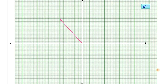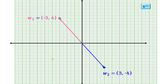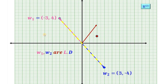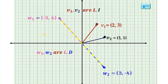In R², consider W1 = (−3, 4) and W2 = (3, −4). These two vectors lie on the same line, and for that reason W1 and W2 are linearly dependent. On the other hand, if we consider V1 = (2, 3) and V2 = (3, 1), then V1 and V2 are linearly independent over R.